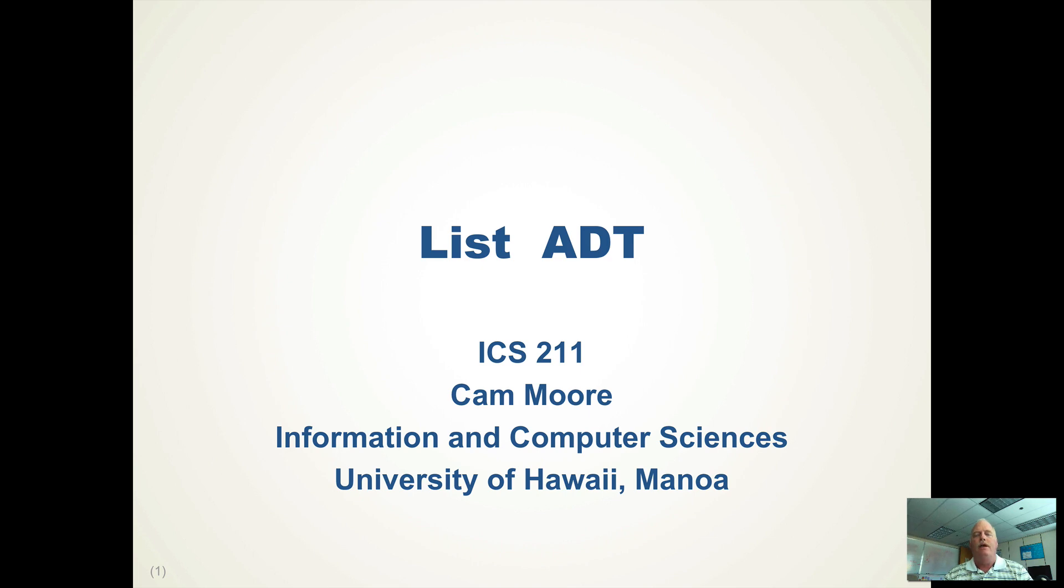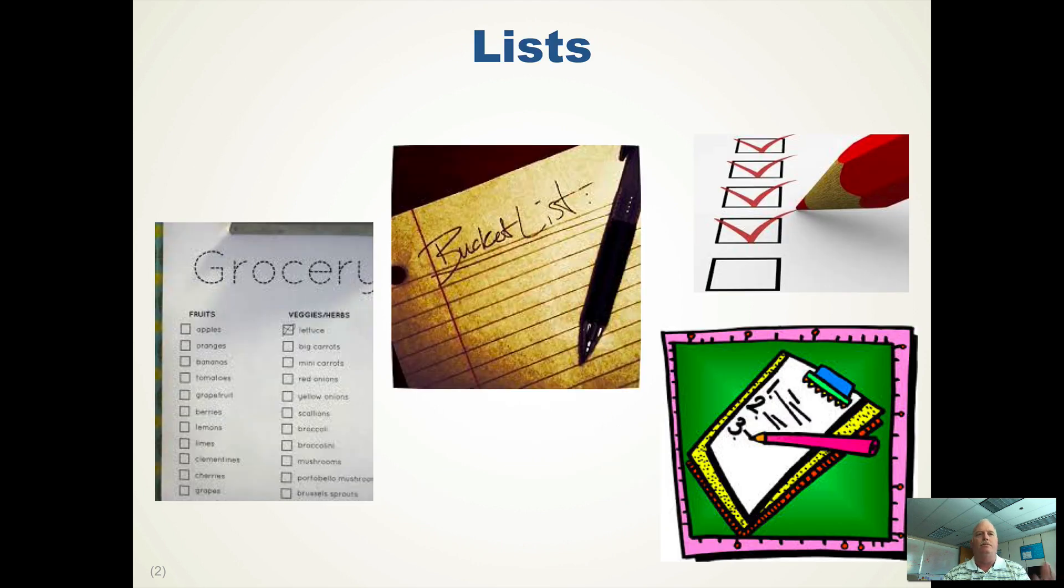Welcome to this brief screencast on our first abstract data type, the list. So we know we have all sorts of lists we use. A lot of times we have a grocery list to keep track of what we want to buy, where we need to get it. We have a bucket list of all the things we want to do before we get old and crusty. And the list is a very valuable data structure that we use to help solve problems. We could model actual lists that we use in the real world. We could also use it as just a container for things and it's got some very nice characteristics.